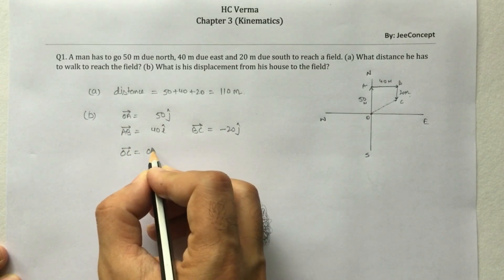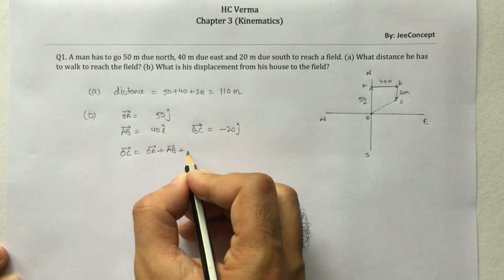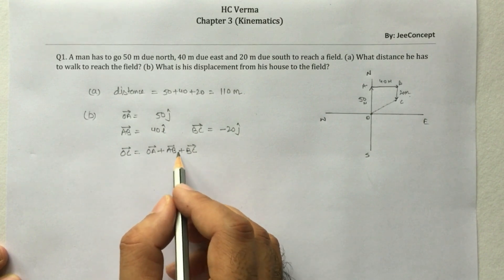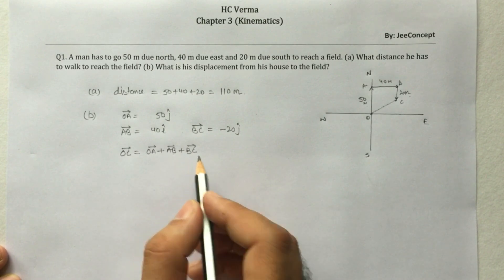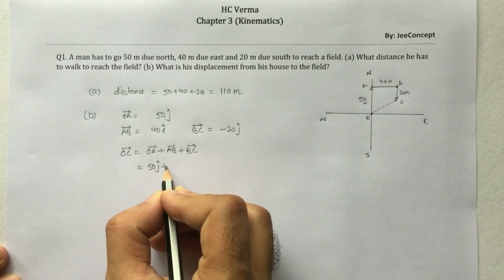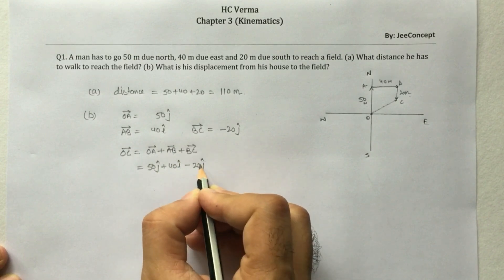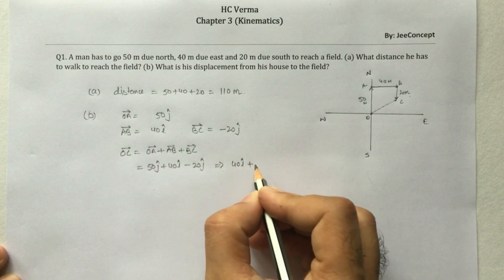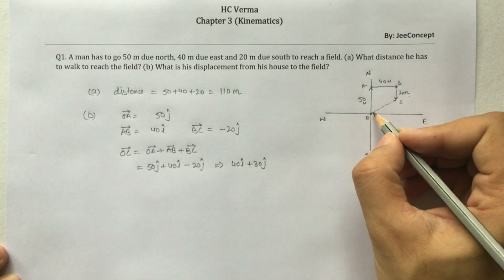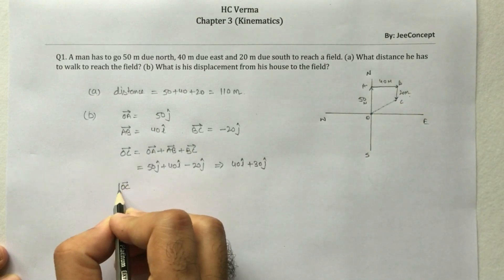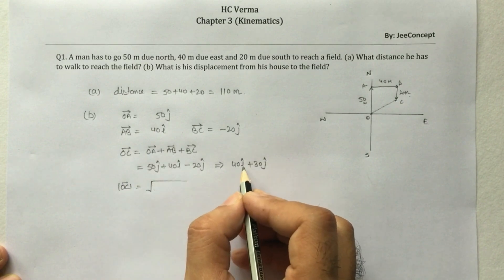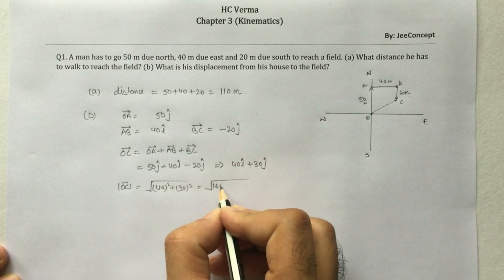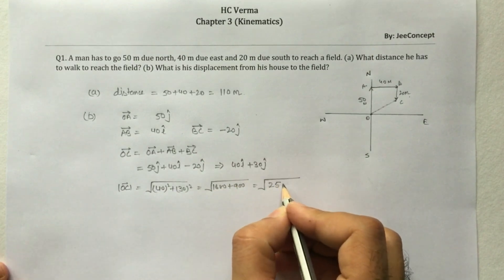OC is the resultant of OA + AB + BC. OA + AB = OB, and OB + BC = OC — this is the fundamental law of vectors. Writing it out: 50j + 40i + (-20j) = 40i + 30j. The magnitude of OC is the square root of (coefficient of i)² + (coefficient of j)² = √(40² + 30²) = √(1600 + 900) = √2500 = 50 meters.